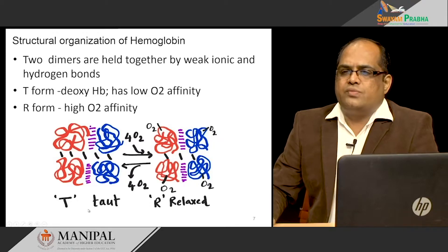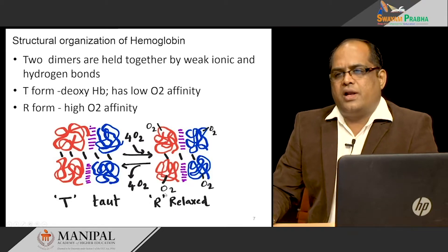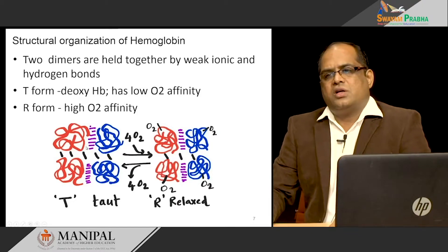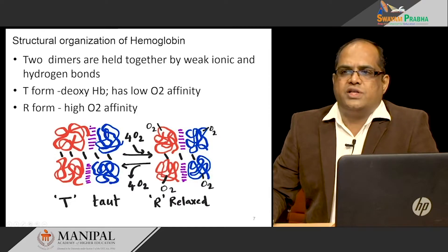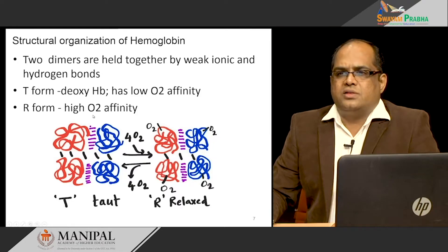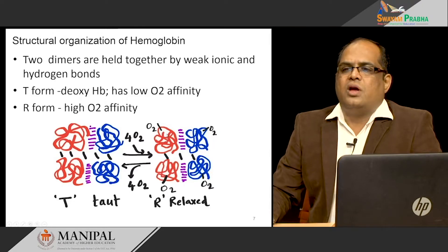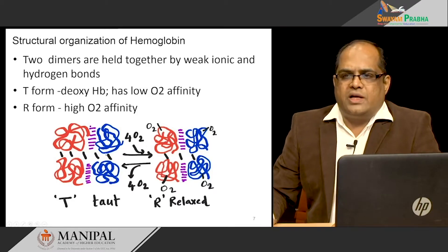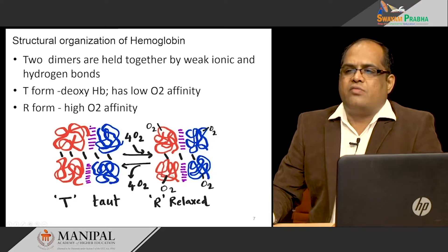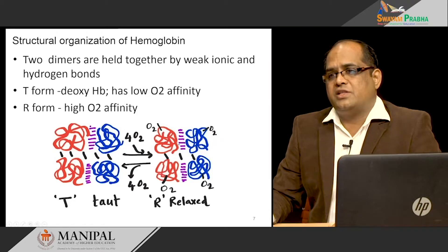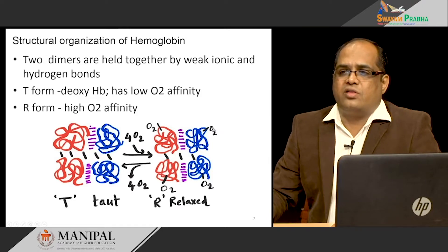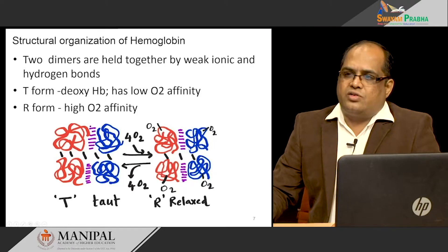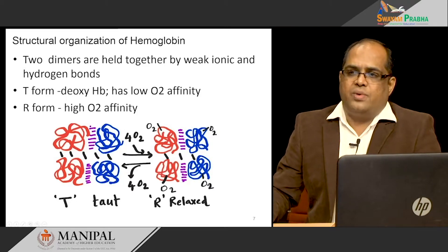Hemoglobin is present in two forms: the T (taut) form and the R (relaxed) form. In the T form, it is deoxyhemoglobin — oxygen is not attached because it has low oxygen affinity. Once an oxygen molecule binds to the T form, the weak hydrogen and ionic bonds, called salt bridges, are broken down. This causes a conformational change in hemoglobin, converting it to the relaxed form. The R form has high affinity for oxygen in a cooperative manner; the binding of the first oxygen is a little difficult, but further oxygen binding is easier.